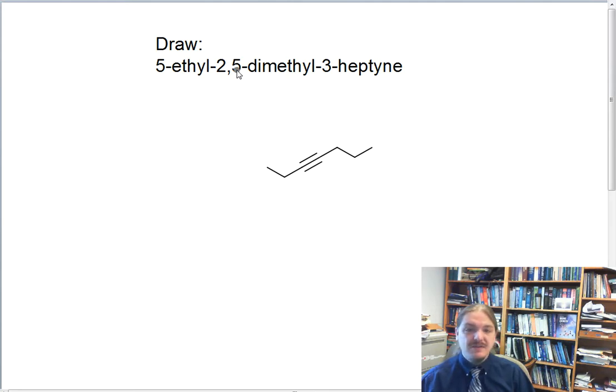Now we go and we look at the substituents. We have 2,5-dimethyl, so that means we have a methyl group at carbon two and another one at carbon five. Let's go ahead and create the numbers on the alkyne. One, two, three where the alkyne starts, carbon four, where the alkyne ends. Here's carbon five at the other end of the alkyne, six and seven. So we want to put a methyl group at carbon two and a methyl group at carbon five.